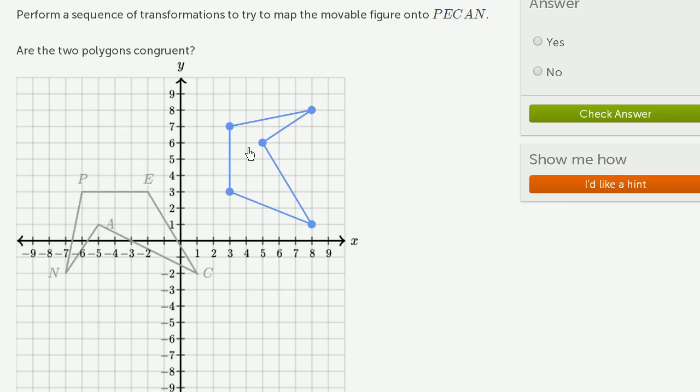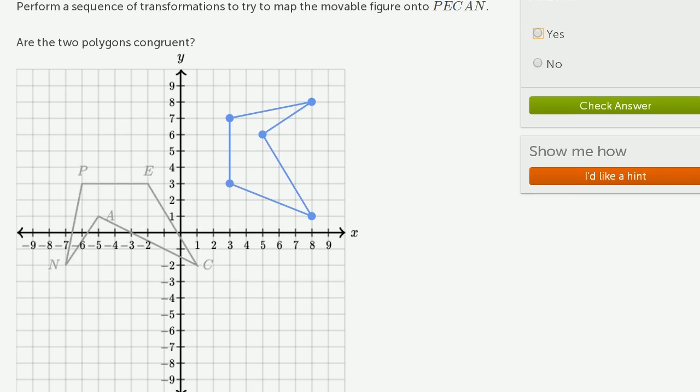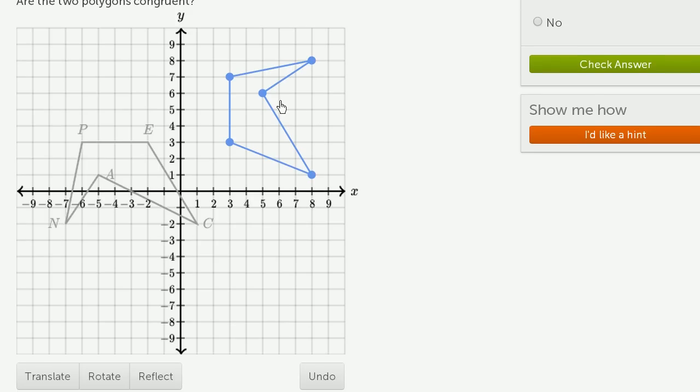So we have another situation where we want to see whether these two figures are congruent. And the way we're going to test that is by trying to transform this figure by translating it, rotating, and reflecting it.